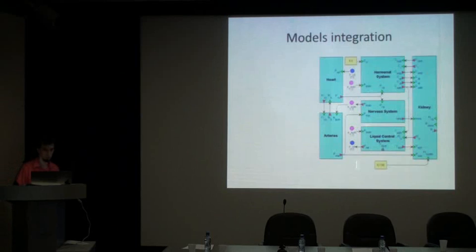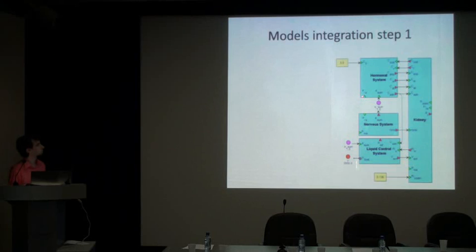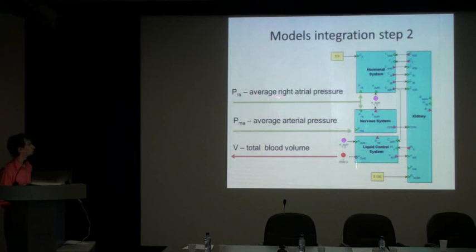So we take our kidney regulation model and remove the arterial and heart modules. We also add a port for total blood volume, just to send it back to the pulsating heart model. Now we notice that the model contains some open input ports which demand parameters obtained from other modules. Those parameters are average right atrial pressure and average arterial pressure, which are needed to provide stimulation of the rest of the model.